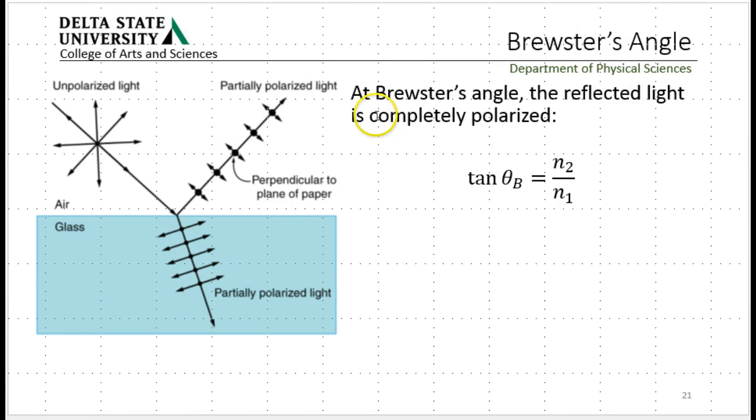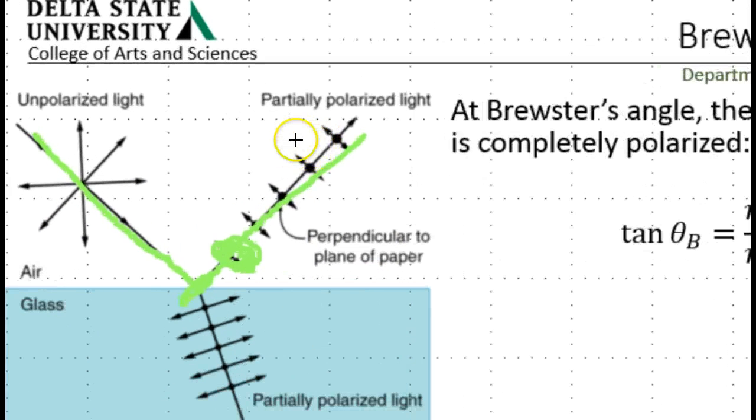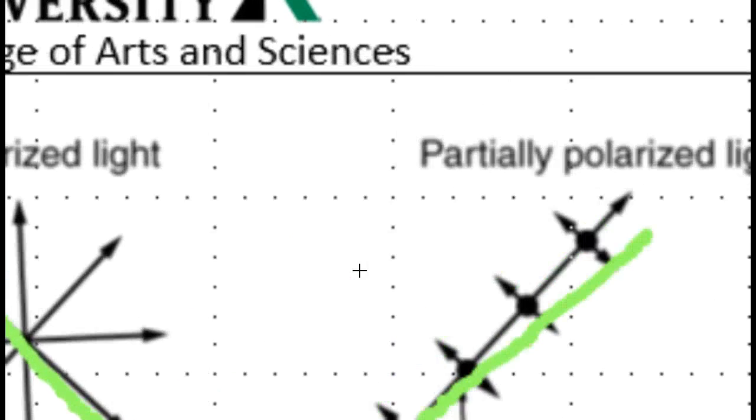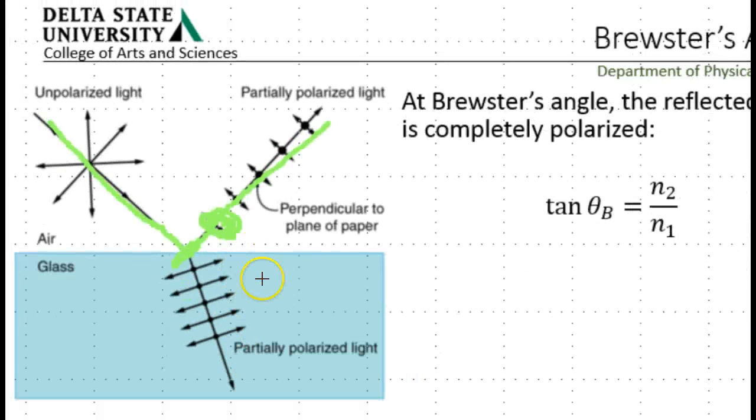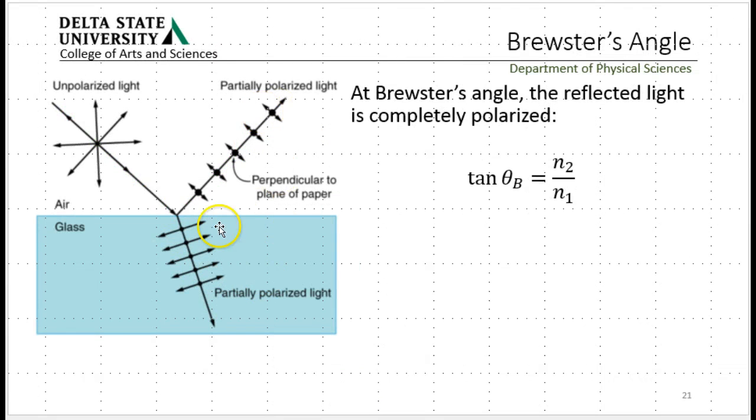One last thing on polarization. It's something called Brewster's Angle. So when light comes down and reflects off of a surface, it becomes partially polarized, and the polarization direction, in this case, is for that component of the light that's in line with the surface. So it's the part coming out of the page here. And then what goes down below is partially polarized as well.